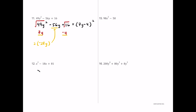For number twelve we have x squared minus 18x plus 81. This is probably a perfect square trinomial. The square root of x squared is x and the square root of 81 is 9, but we use negative 9 because of the minus sign. Multiplying x and negative 9 gives negative 9x, and doubling gives negative 18x, which matches the middle term. So this factors into (x minus 9) squared.